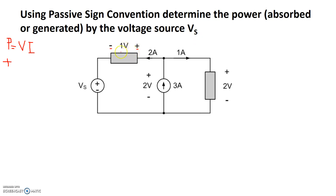So in this case, we look at this particular element. We see 2 amps is going through the positive terminal, so it's following the passive sign convention. We see that 1 amp is going through 2 volts this way, and it's also following the passive sign convention. We have 2 amps of current with 1 volt following the passive sign convention, so the power is plus 2 watts. The positive sign in front of the power means that power is being absorbed.